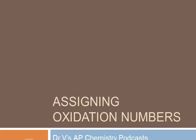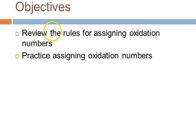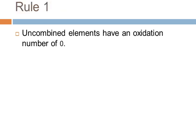Hi and welcome to Dr. V's AP Chemistry webcast. Today we're talking about oxidation numbers and how to assign them. I'd like to review the rules for assigning oxidation numbers and do a number of practice problems, so you feel really comfortable assigning these. You need to be able to assign the oxidation number for any atom in a compound. It's really not that hard, but we do need to go through the rules.